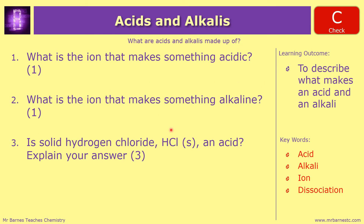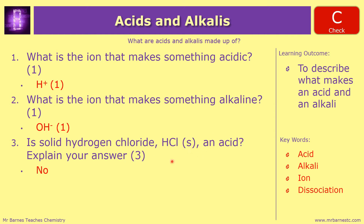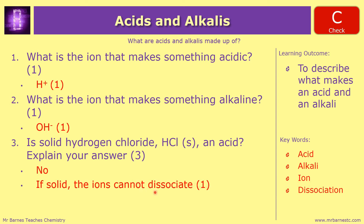Let's see how you've done. Questions one and two are nice and simple. What is the ion that makes something acidic? H+ — you need to put the actual symbol to get the mark. And for the alkaline one it's OH-. Again, with the symbol and your plus and minus as superscripts. For number three, you get one mark for saying it's not an acid, and your explanation is because the ions can't dissociate — that's your keyword — which means the ions aren't free to move, so there's no H+ ion, which is what makes it acidic.